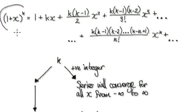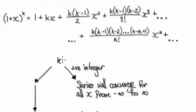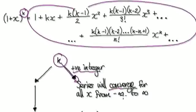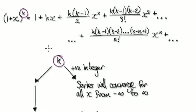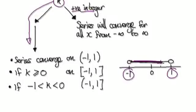We've seen in the previous video that this can be represented by the binomial series. If k is a positive integer, then the whole series will converge from negative infinity to infinity. But if this k is not a positive integer, then the series will definitely converge from negative 1 to 1.